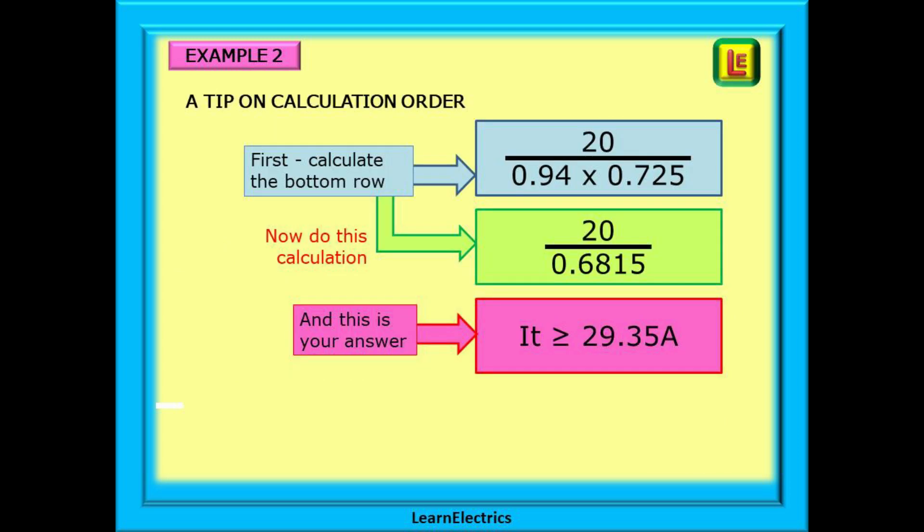A tip on calculation order. It is so important that you get this calculation right. Here is one method. First, calculate the bottom row and write the answer down. 0.94 multiplied by 0.725 is 0.6815. Now do the calculation. 20 divided by 0.6815 and this is your answer. It must be equal to or greater than 29.35 amps. If you get something like 14.5 amps you've gone wrong. Follow this method and you will get the right answers.